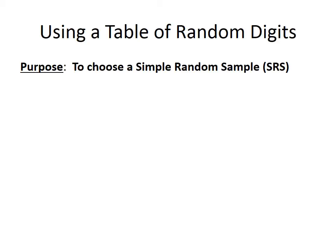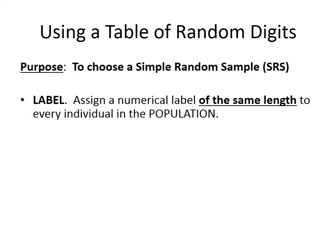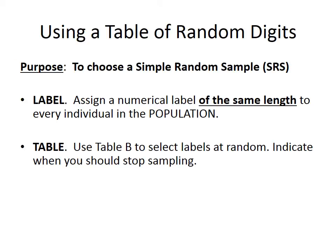There are three steps we want to take. The first step is to label — we want to assign a numerical label to every individual in the population. You really need to look at the population size as you are assigning those labels. The other important thing is that all of those labels are the same length. For example, if we have single-digit and double-digit labels, they are of different lengths; they should all have the same length.